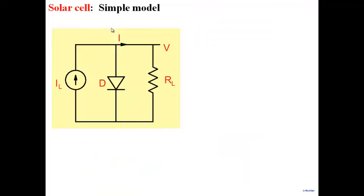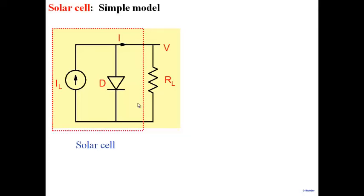A model for a solar cell under light consists of the usual diode, but in parallel with a current source IL — the light-generated current. What light does is generate a current IL. A P-N junction in the presence of light can be thought of as a usual diode in parallel with a current source.